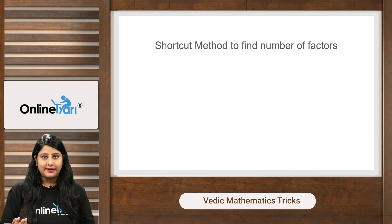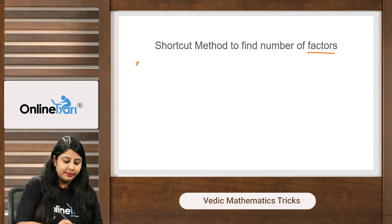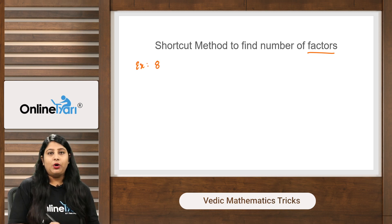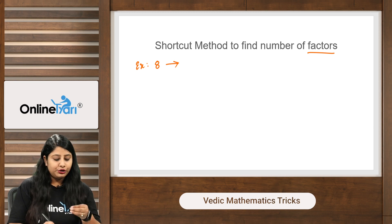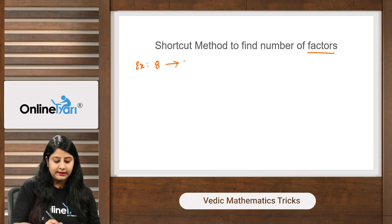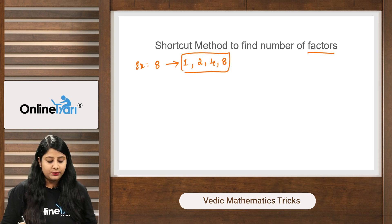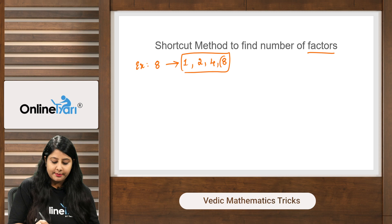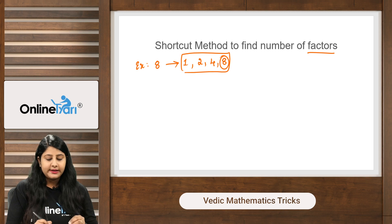Before that, let me explain what factors are, then we will understand the technique easily. A factor is a number which divides the given number exactly, meaning with remainder 0. For example, the factors of 8 are 1, 2, 4, and 8 — so there are 4 factors. Always remember, the maximum factor for any given number is the number itself.